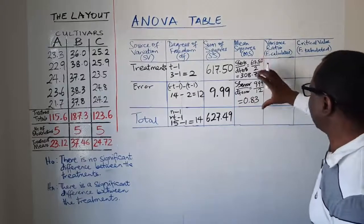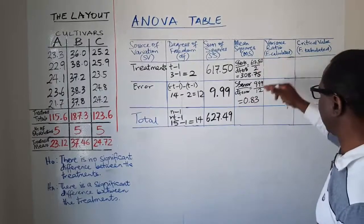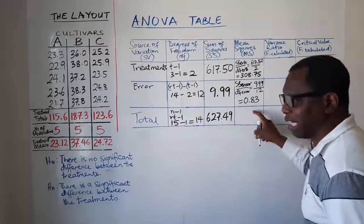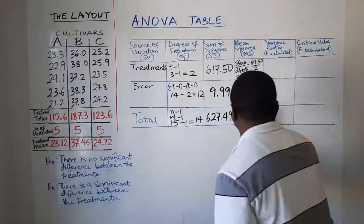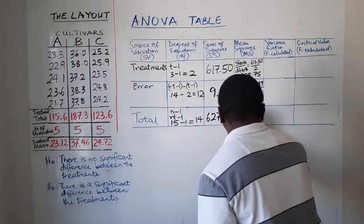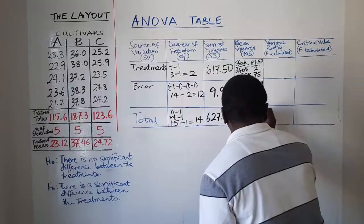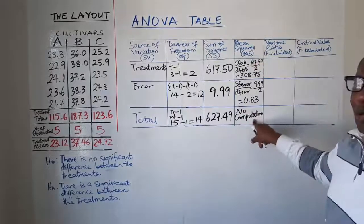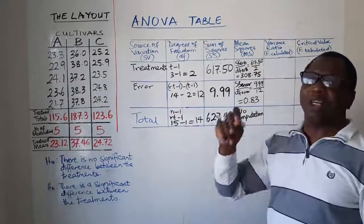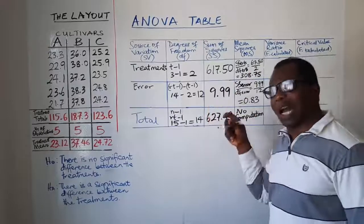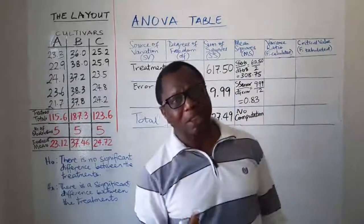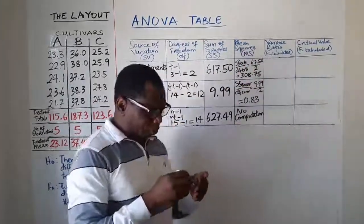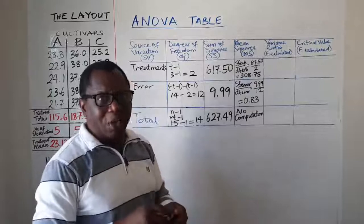Now that you have that, now you wonder how about this. We don't compute anything here. We leave it blank. No computation. So no computation of MS for total. Why is that so? It is so because mean squares are not additive. Please note that in the ANOVA table mean squares are not additive.